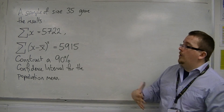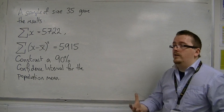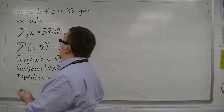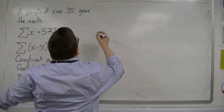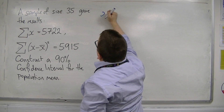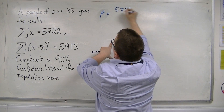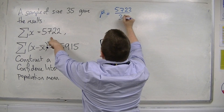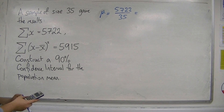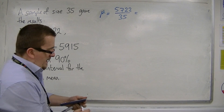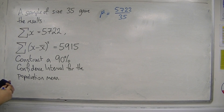We don't know the population mean, but we can get an estimate using the sample mean as an unbiased estimator, using this information. Our sample mean will be equal to 5,722 — all of them added together — divided by how many there are, so divide by 35. So 5,722 divided by 35. It doesn't give a nice number, so I'm just going to leave it as this improper fraction.